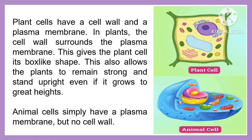Plant cells have a cell wall and a plasma membrane. In plants, the cell wall surrounds the plasma membrane. This gives the plant cell its box-like shape and allows the plant to remain strong and stand upright even if it grows to great heights. Animal cells simply have a plasma membrane but no cell wall.